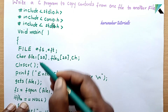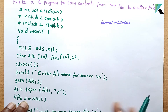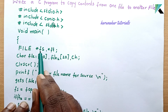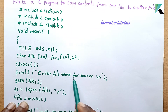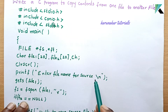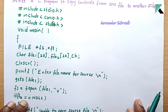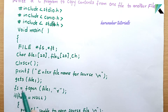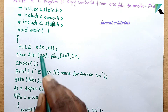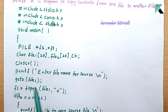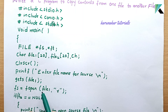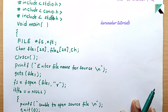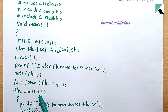After variable declaration, clear screen. Next, we connect the source file: print 'Enter file name for source', then get the source file name using gets into file1. Then Fs equals fopen of file1 in read mode. If Fs equals null, print 'Unable to open source file' and call exit(0).